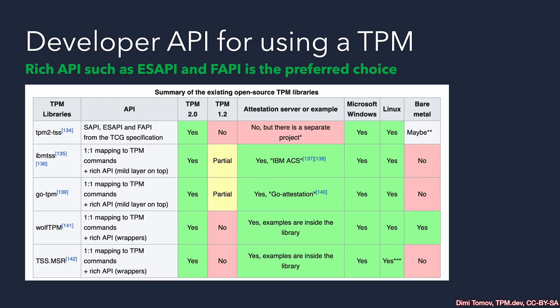In summary, when choosing a TPM stack, the API would not be your first consideration. The most important aspect is where you're going to use this library and in what environment. Would that be Microsoft Windows? Would that be Linux? Would that be a bare metal system or some kind of embedded system? Is that embedded system going to be a real-time operating system or a Linux-based device? Based on that, I would recommend choosing the stack, and then you can be more precise — for example, whether you prefer wrappers or the way FAPI operates.